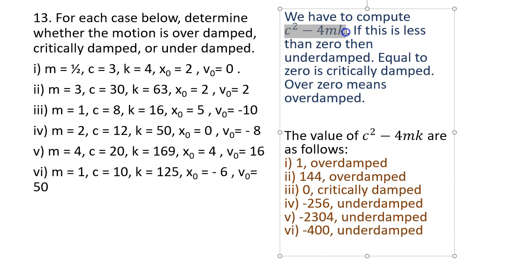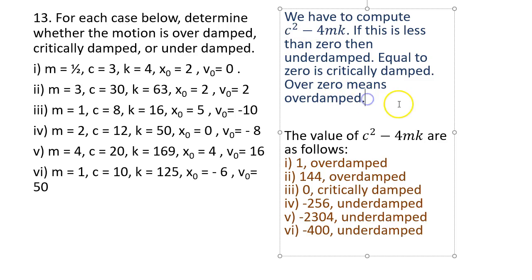The quantity c² - 4mk is the discriminant of the quadratic equation obtained from the characteristic equation. It appears in the quadratic formula as the radicand inside the square root. If this is less than zero, the system is under-damped. If it equals zero, it's critically damped. If it's greater than zero, it's over-damped.